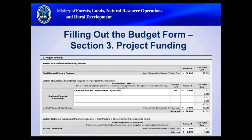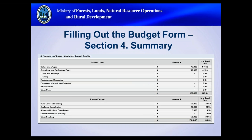When detailing funding sources, you can include sources not yet verified. Section 4 auto-calculates based on Sections 2 and 3; total project costs and total project funding amounts should balance, meaning all project funding should have a corresponding project cost. If total project funding is greater than total project cost, review all project activities and ensure they've been appropriately detailed in Section 2.